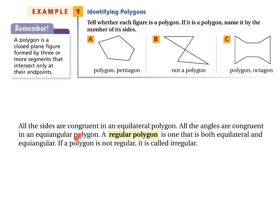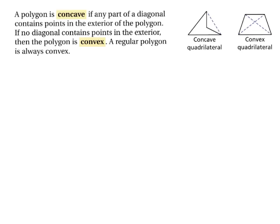All the sides are congruent in an equilateral polygon. All the angles are congruent in an equiangular polygon. A regular polygon is one that is both equilateral and equiangular. If a polygon is not regular, it is called irregular. A polygon is concave if any part of a diagonal contains points in the exterior of the polygon. If no diagonal contains points in the exterior, then the polygon is called convex. A regular polygon is always convex.